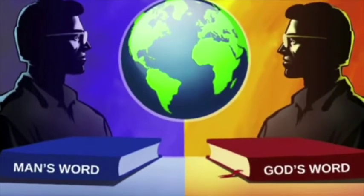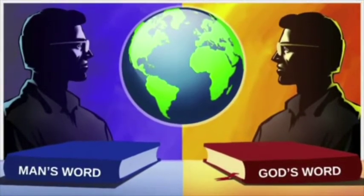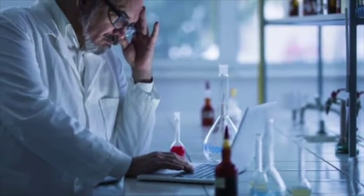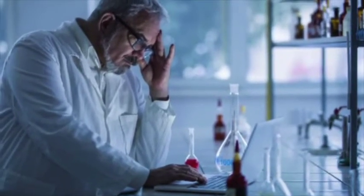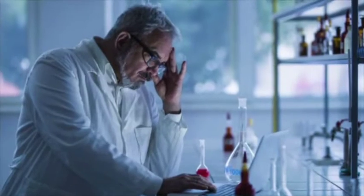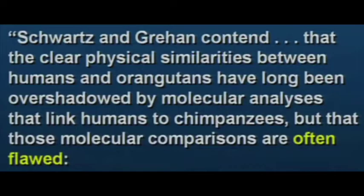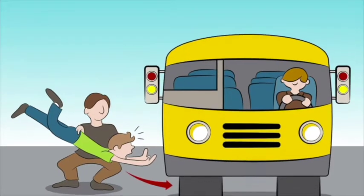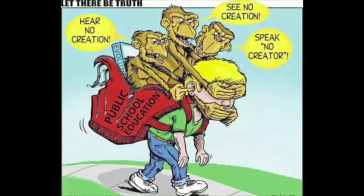Even other secular scientists who believe humans split from orangutans get mad at the biased, hard-headed, dogmatic scientists who won't look at their evidence because they are so set on chimps being the last ancestor to humans. They say: 'Molecular comparisons between humans and chimps are often flawed. There is no theory holding that molecular similarity necessarily implies an evolutionary relationship, and molecular data that contradicts the idea that genetic similarity denotes relation is often dismissed.'